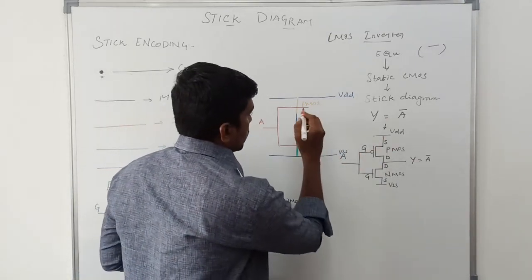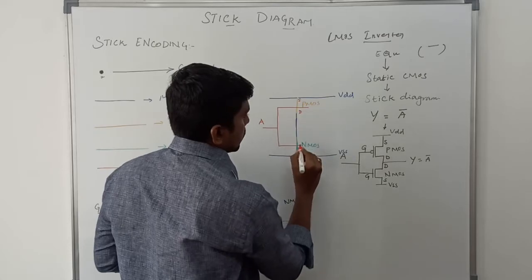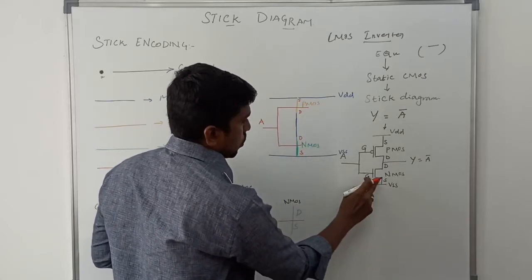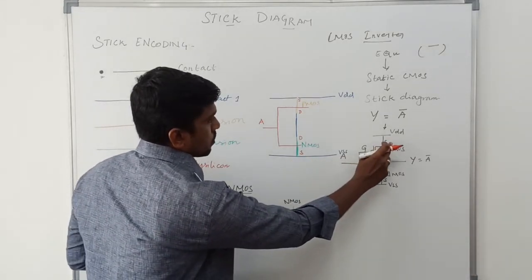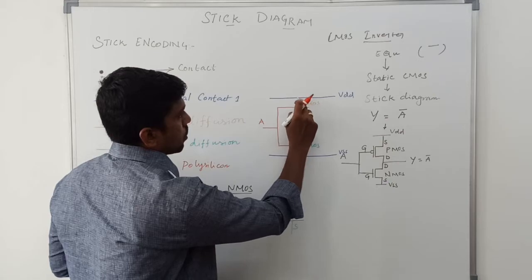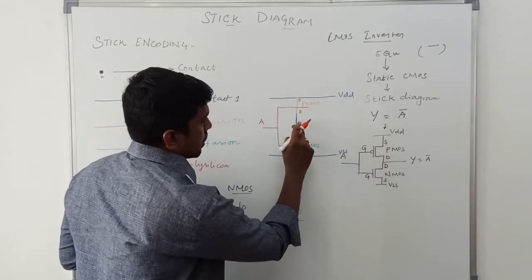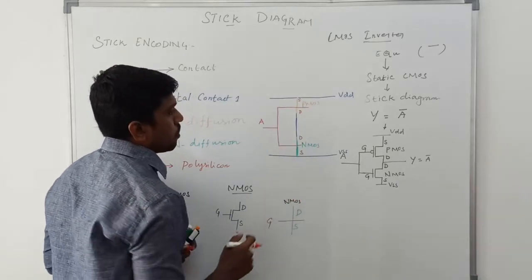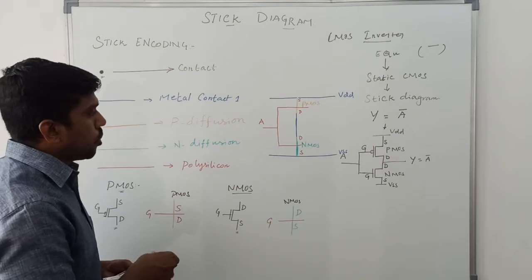The source terminal of the NMOS is connected to VSS, and the source of the PMOS is connected to VDD. The drain of PMOS and the drain of NMOS are connected with the help of metal.